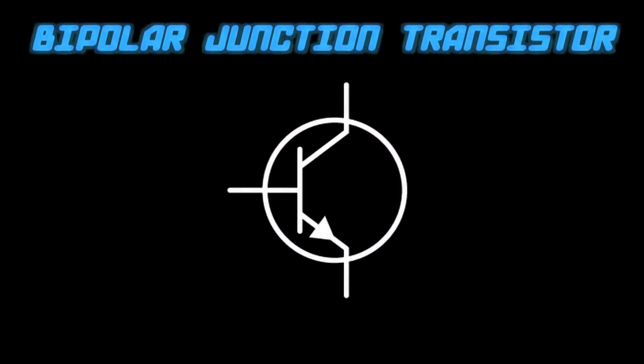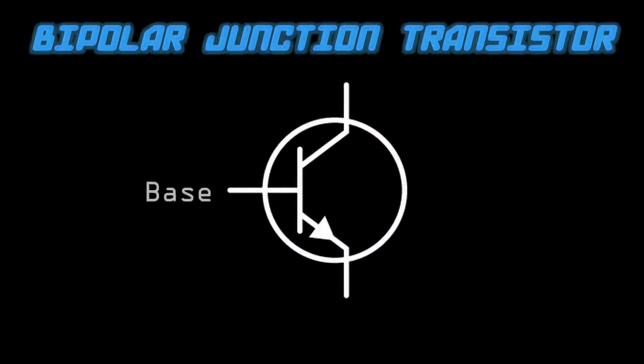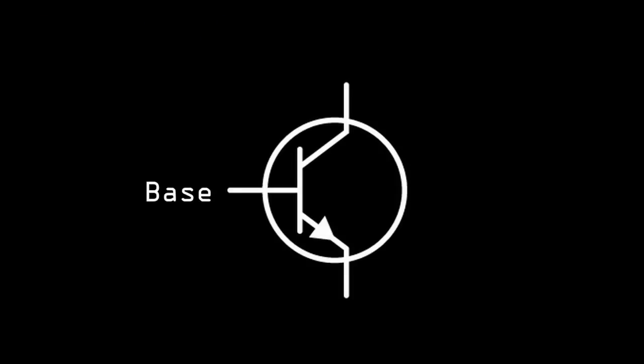Bipolars are controlled by applying a current to their base terminal, which in turn controls the flow of charge between the collector and emitter terminals. The arrow in the transistor symbol indicates the direction that positive charge can flow.